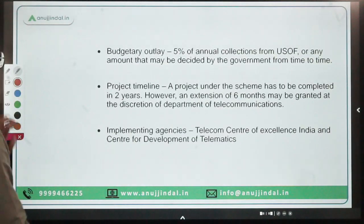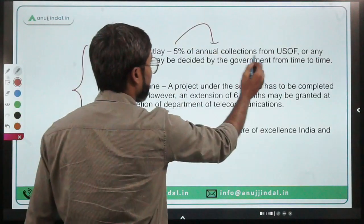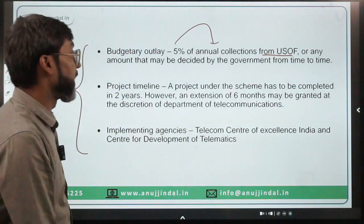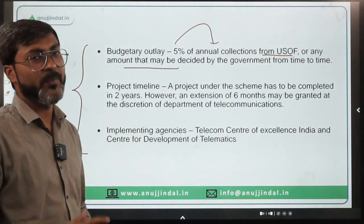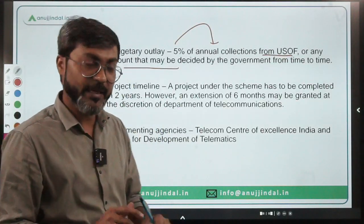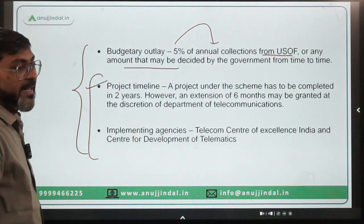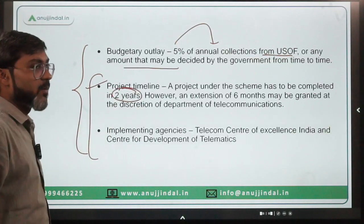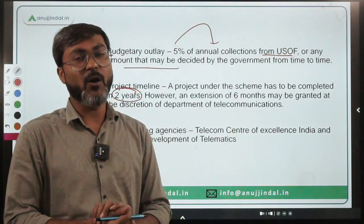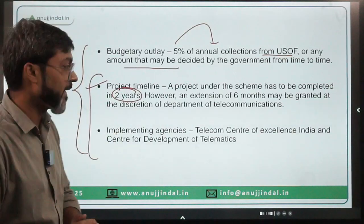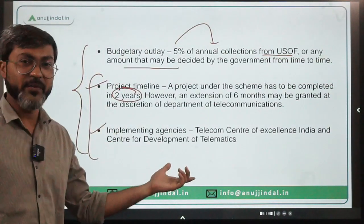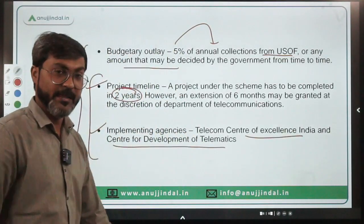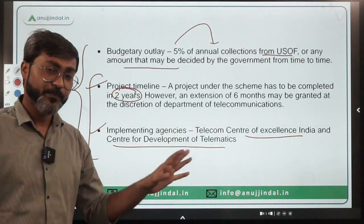The scheme was launched in 2022 under the Ministry of Communication. The budgetary outlay is five percent of annual collections from USOF, plus any additional amount decided by the Government of India from time to time. Any project under this scheme shall be completed within two years; however, there is a provision for a six-month extension on the recommendation of the Department of Telecommunication.